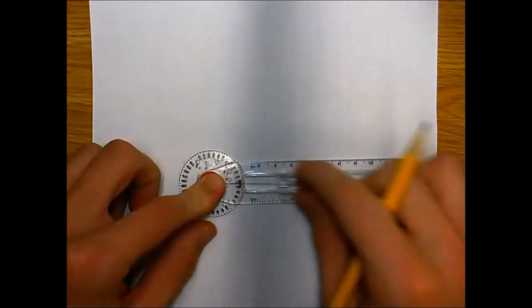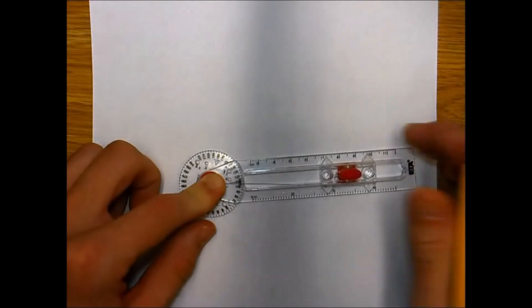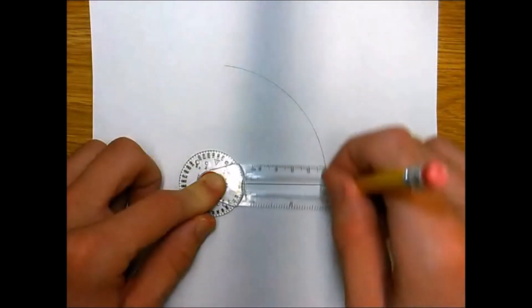We start off with some line segment AB. For most of the construction, we're going to set the length of the compass to measure exactly AB and we're not going to change it until the end.